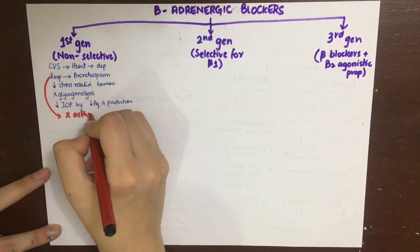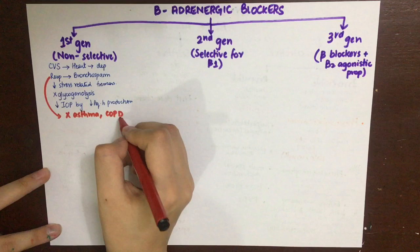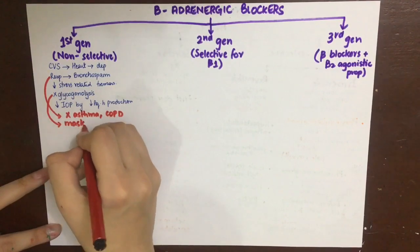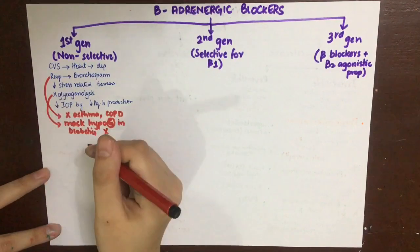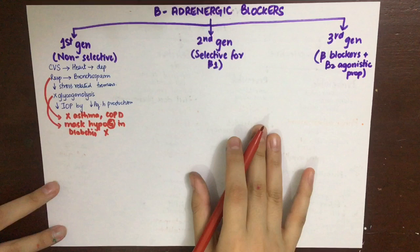Side effects of first-generation beta blockers include bronchospasm, making them contraindicated in asthmatics and COPD patients. They also mask hypoglycemic states in diabetics: since hypoglycemia manifests as tachycardia, tremors, and palpitations, beta blockers block these warning symptoms, leaving the patient unaware of their hypoglycemic state, which can lead to coma and death.